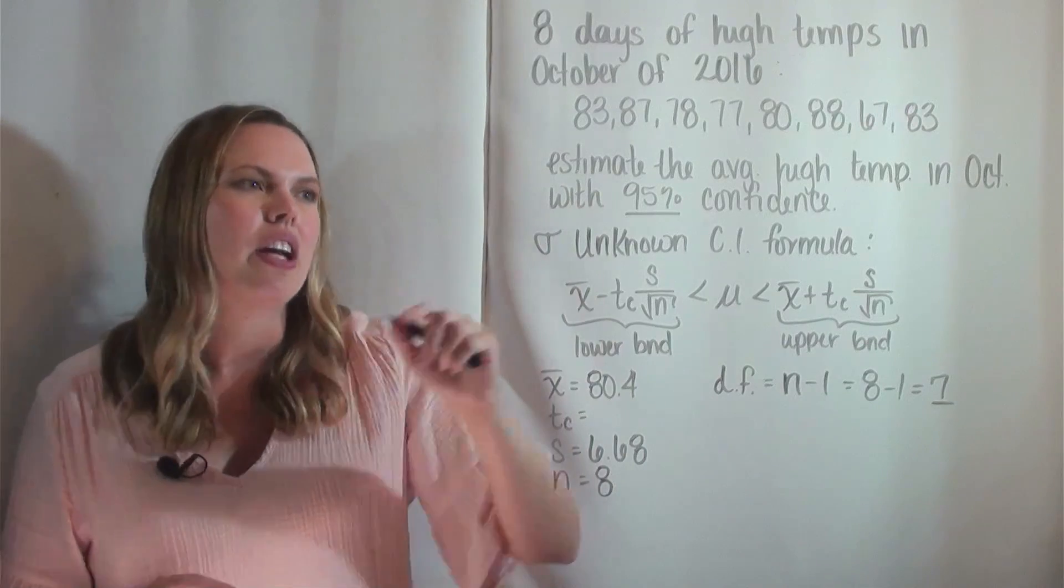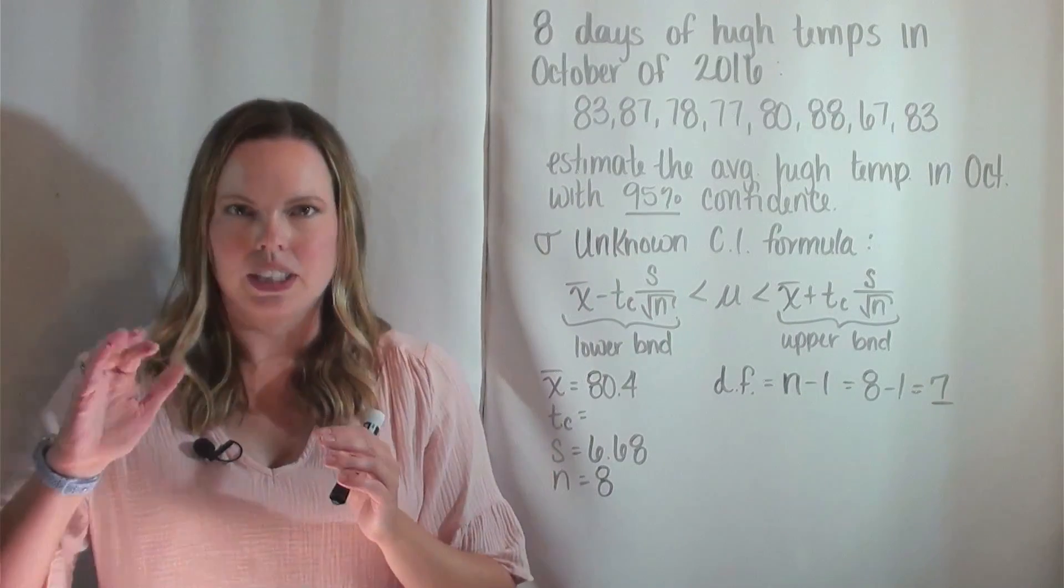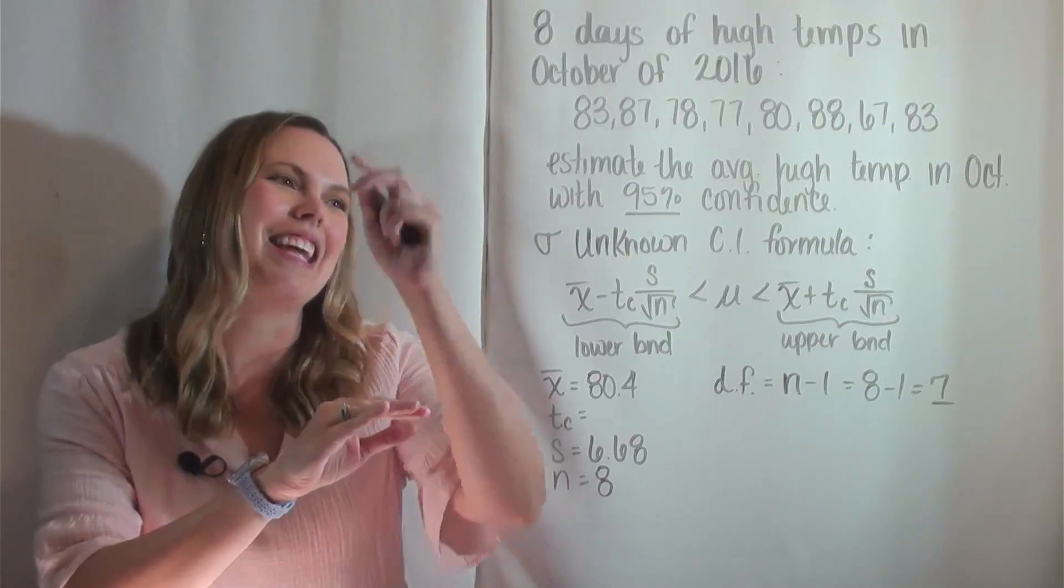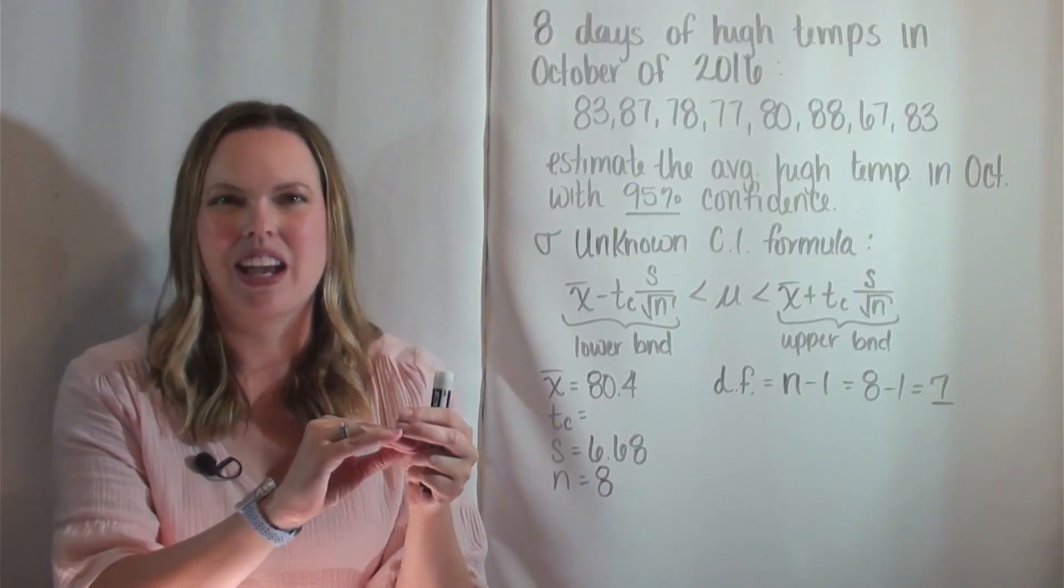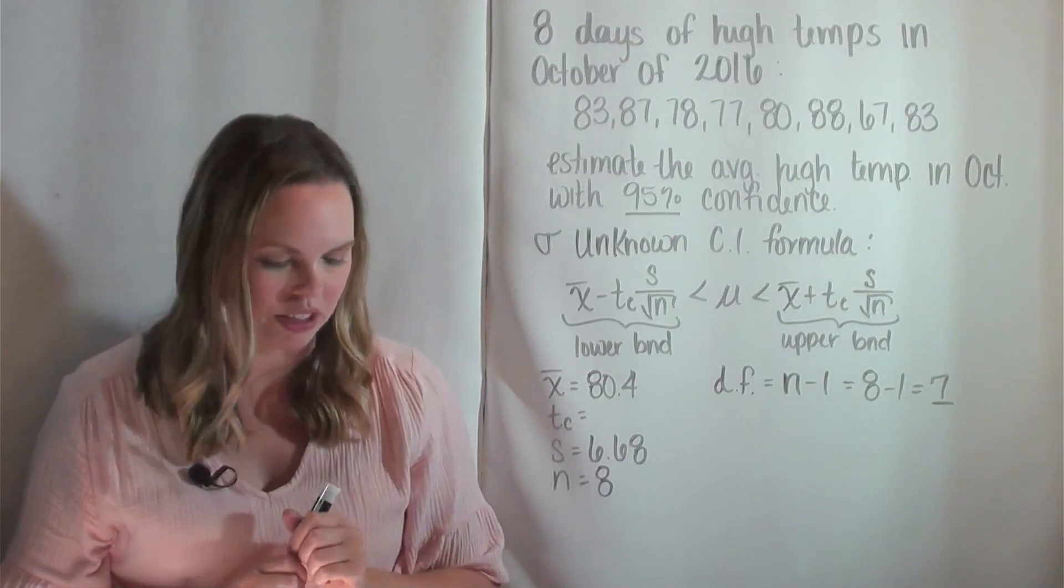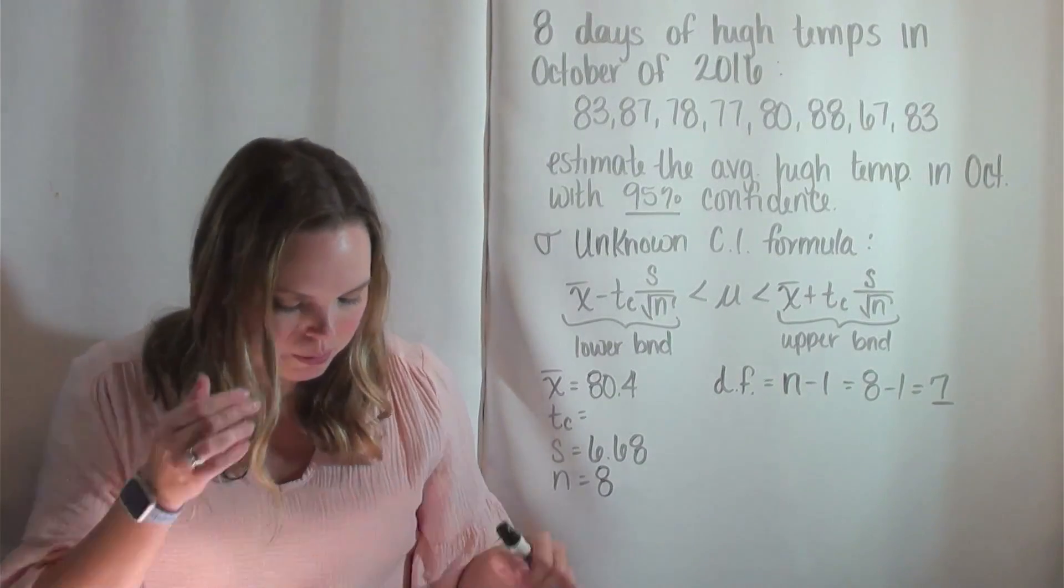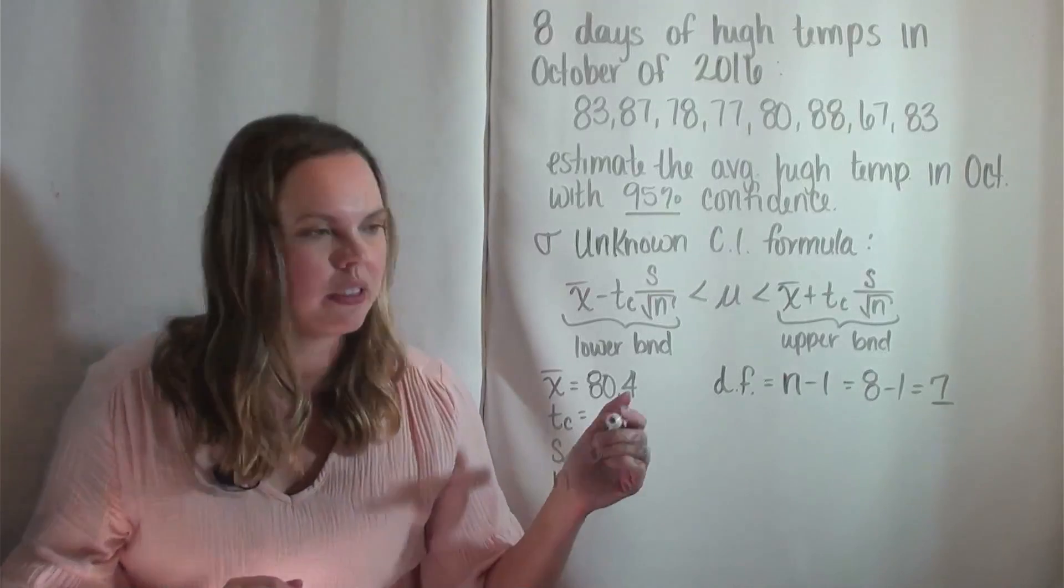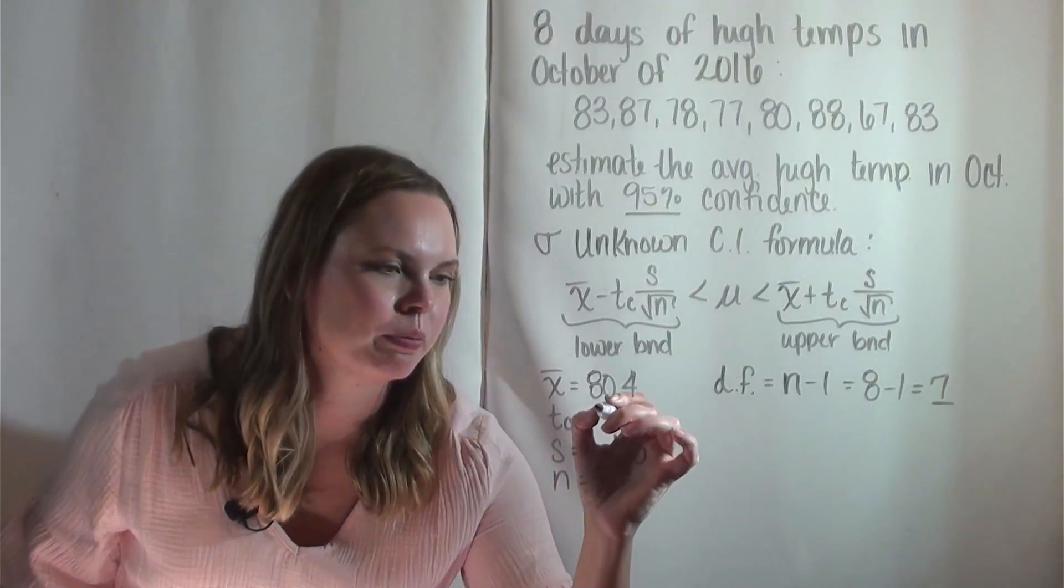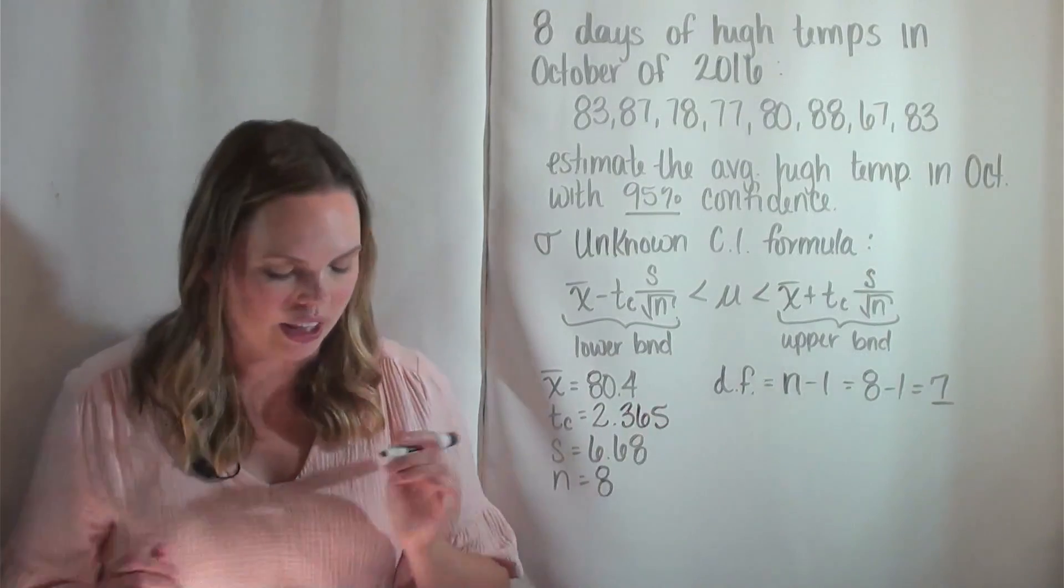So you're looking for a degrees of freedom of seven, the seven line, and then the 95% or 0.95 column. Wherever those intersect, that's going to be your T sub C. You should find that to be 2.365 in that table.